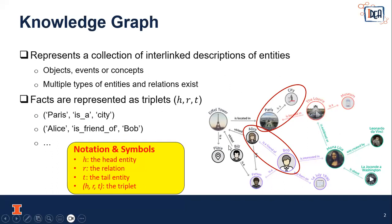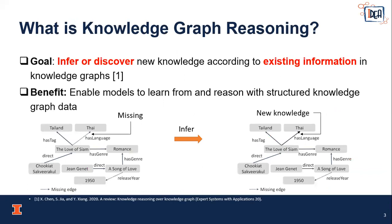Knowledge Graph is a graph structure used to represent the relationships between real-world entities. The real-world facts are represented as triples in the Knowledge Graph. For example, 'Paris is a city' and similar triples are represented in the Knowledge Graph. The goal of Knowledge Graph reasoning is to infer or discover new knowledge according to the existing information in the Knowledge Graph.